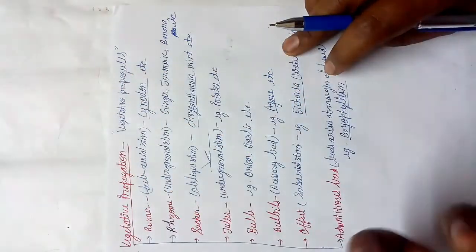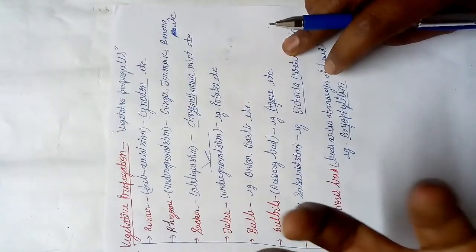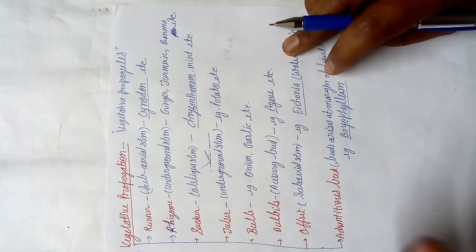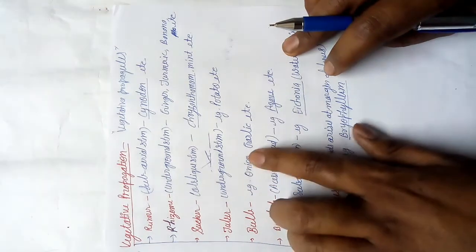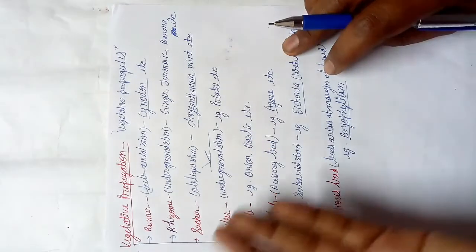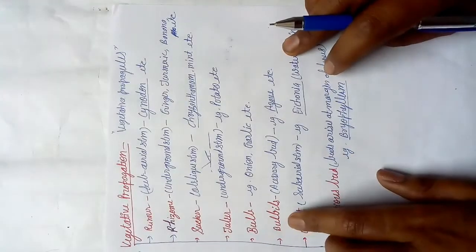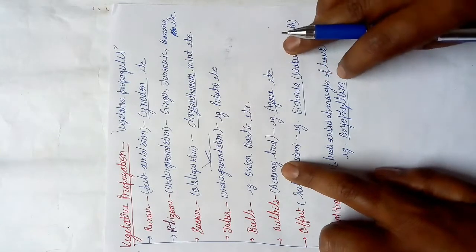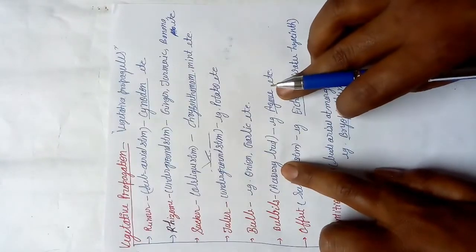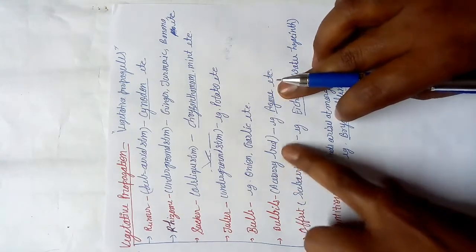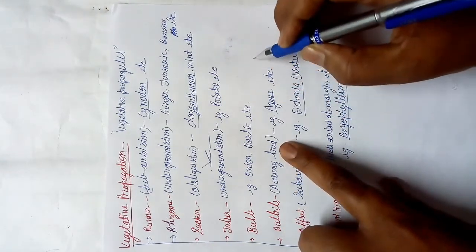Bulb is a structure like an onion. Onion and garlic are examples of bulb. Bulbil is an accessory bud — the example is Agave (full name Agave americana).